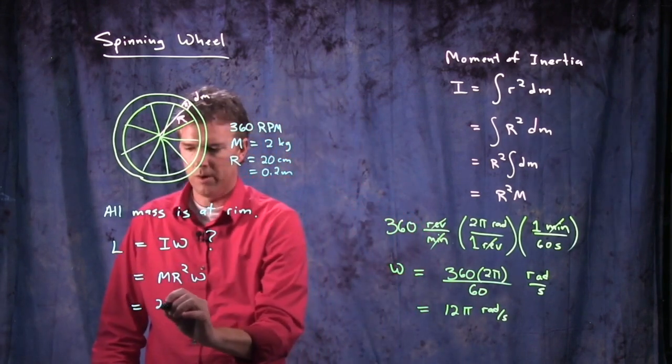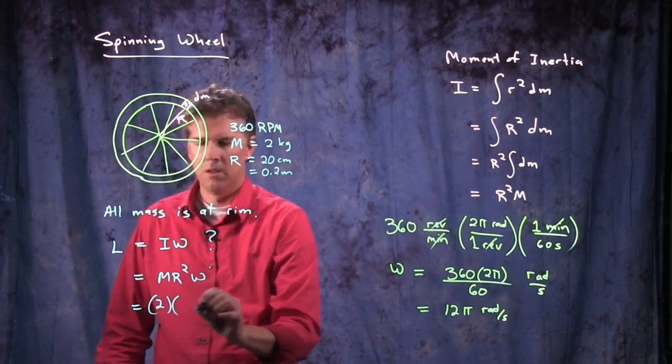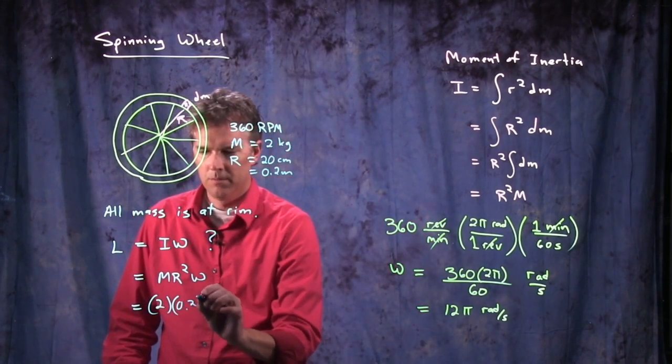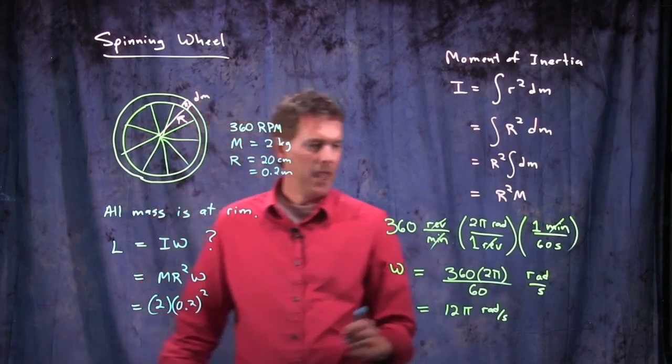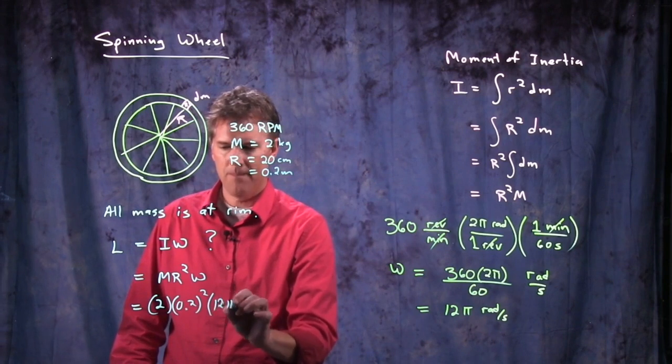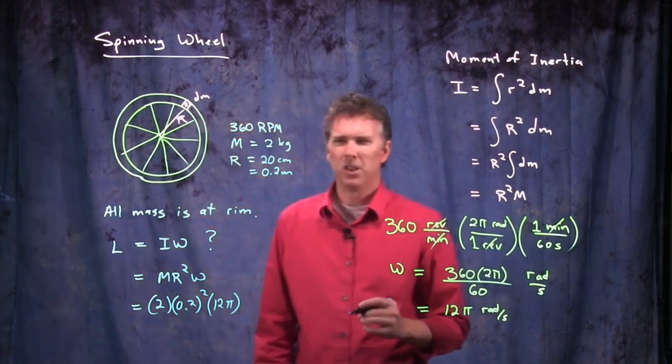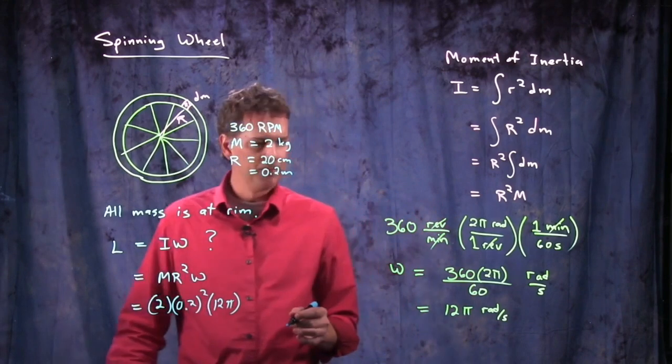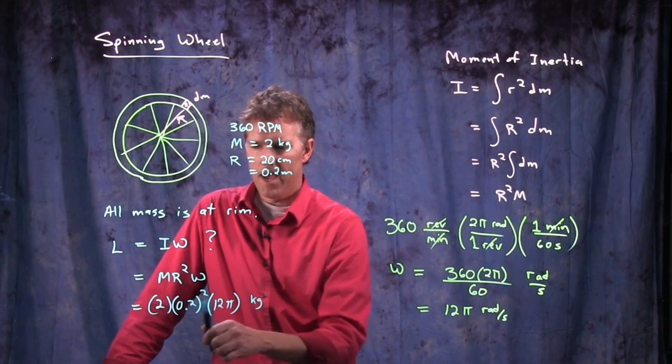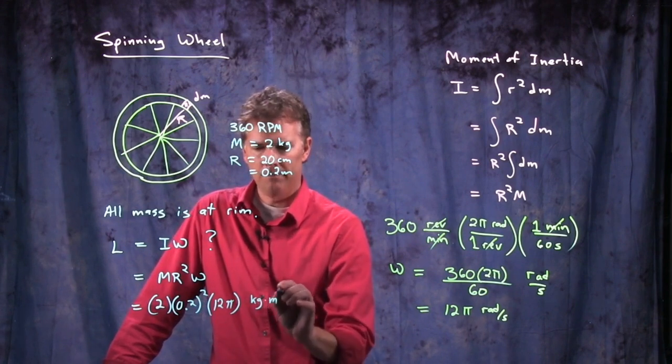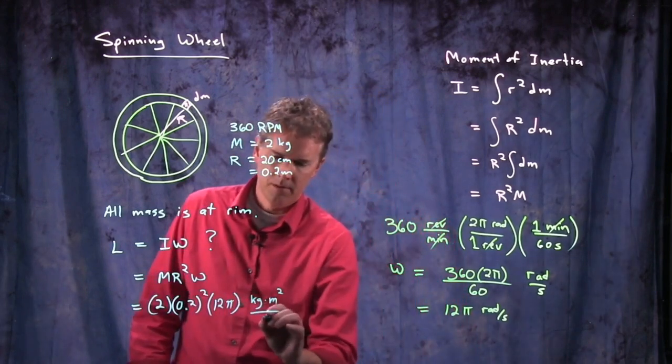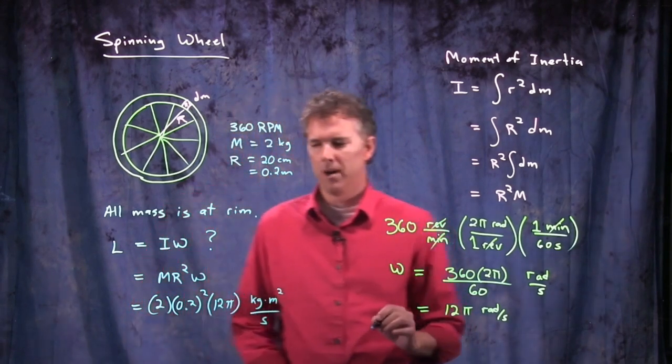So mass of two kilograms. Radius of 0.2. And we got to square that. And then we have an omega of 12 pi. And let's see what the units are on this angular momentum. We had kilogram. Then we had meters squared. Radians is of course unitless. But we had seconds in the bottom.